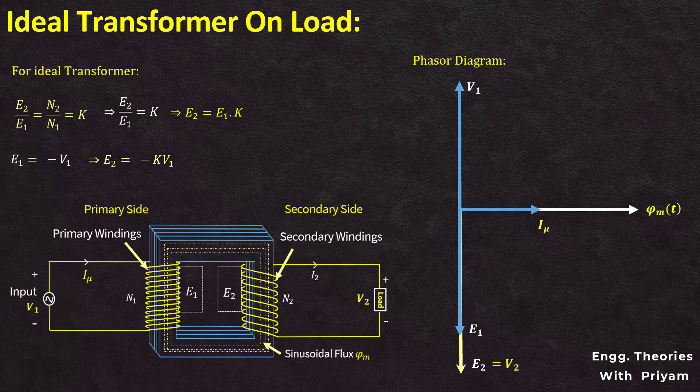Now, we will consider a load connected across the secondary of the ideal transformer. Then a current I2 will flow through the load, creating a magnetomotive force N2I2, which creates a flux phi 2. To oppose this flux, an additional current I2' flows in the primary winding. So, the primary current is the sum of magnetizing current and the additional current I2', or I1 equals I mu plus I2'. Based on the load, the current in the secondary winding I2 will vary, which causes I2' to vary as well. The relationship between these two currents is I2' equals K into I2, so I2' can be drawn after drawing I2.